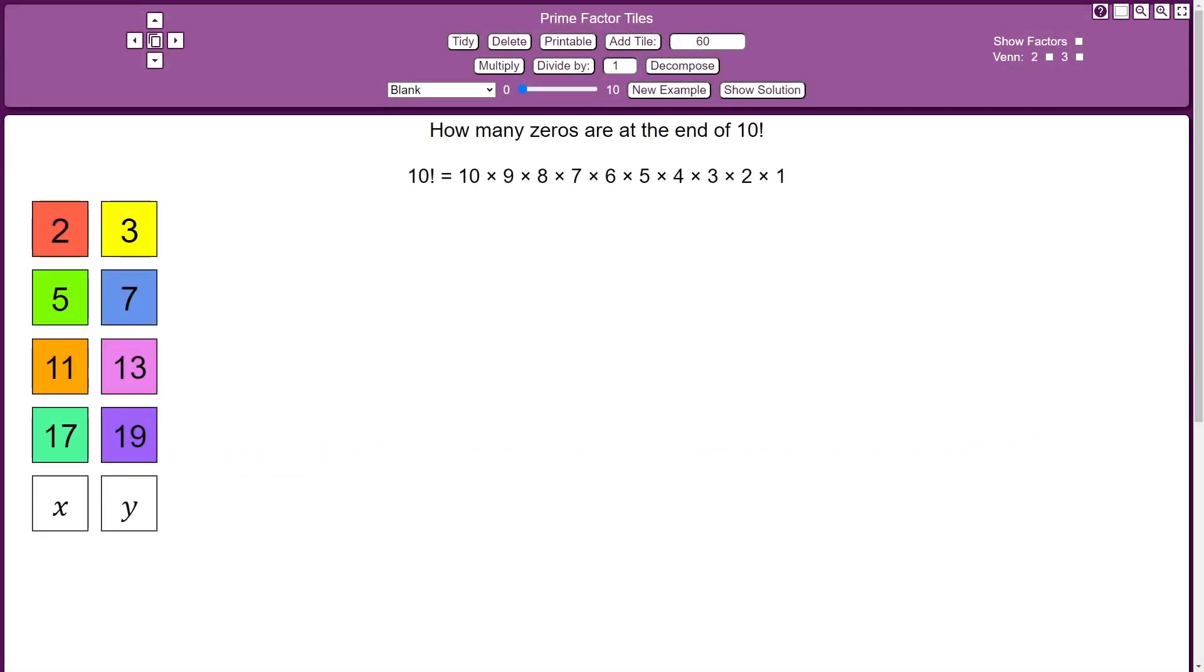Let's use prime factor tiles to calculate how many zeros would be at the end of 10 factorial. If you're not sure what 10 factorial is,